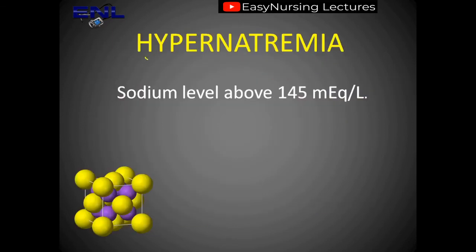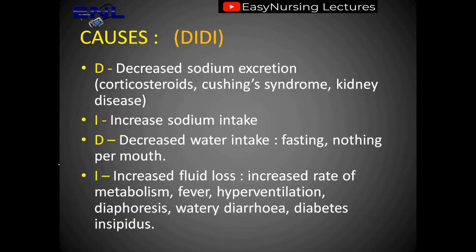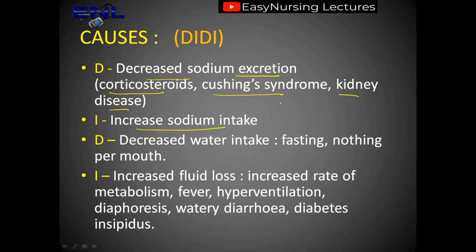Now let's talk about hypernatremia. Hyper means excessive, so sodium level above 145 milliequivalents per litre is called hypernatremia. The causes mnemonic is 'DIDI.' From the first D, we have decreased sodium excretion — like taking corticosteroids, Cushing syndrome, which is the inability of the kidney to excrete potassium and sodium, and kidney diseases. From I, increased sodium intake — a high-salt diet leads to hypernatremia. From the second D, decreased water intake — like fasting or nothing per mouth — also causes hypernatremia.